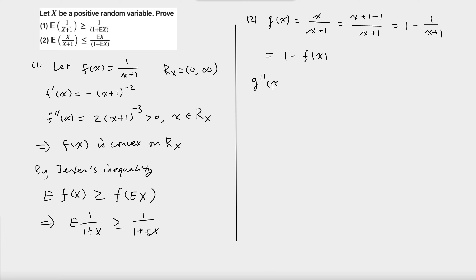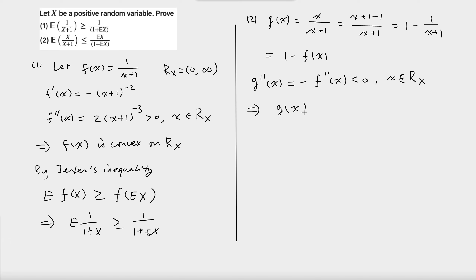If we take the second derivative of g, it equals the negative of the second derivative of f. We showed that the second order derivative of f is greater than zero when x is in the range of x, so the second derivative of g is less than zero on the range of x. This implies g(x) is concave on the range of x, and therefore negative g(x) is convex on the range of x.